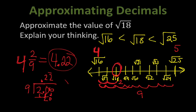If you check it with a calculator, the square root of 18 is 4.24 — so we're very, very close. Remember, we don't use equal signs here; we use the approximation symbol. Doing this by hand without a calculator, we got pretty darn close — that's pretty awesome.